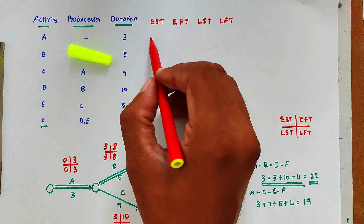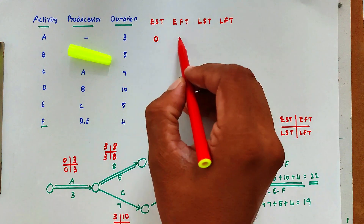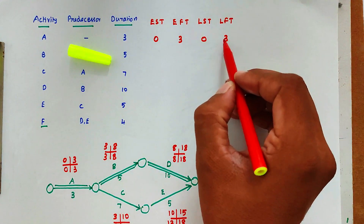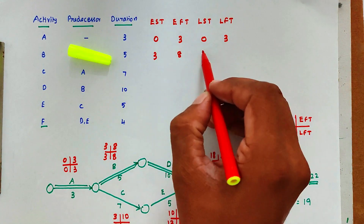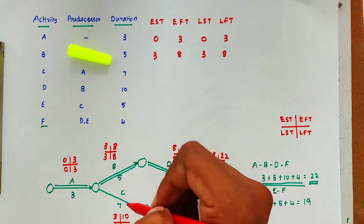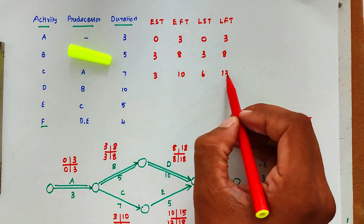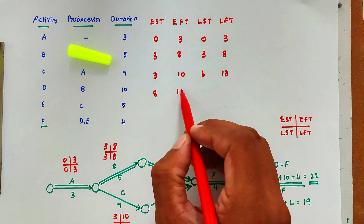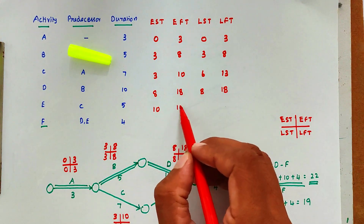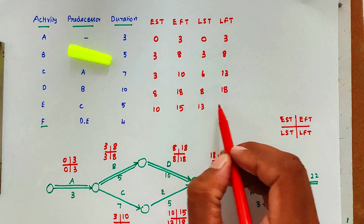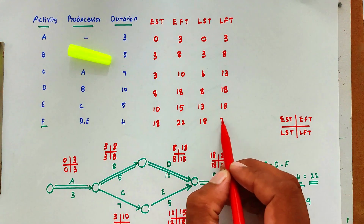So now we can tabulate EST, EFT, LST, and LFT for all activities. Activity A: 0, 3, 0, 3. Activity B: 3, 8, 3, 8. Activity C: 3, 10, 6, 13. Activity D: 8, 18, 8, 18. Activity E: 10, 15, 13, 18. Activity F: 18, 22, 18, 22.